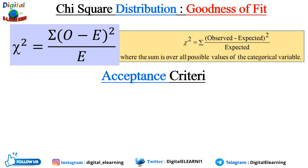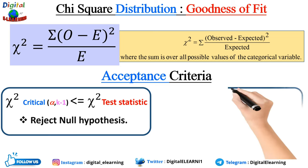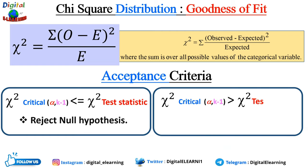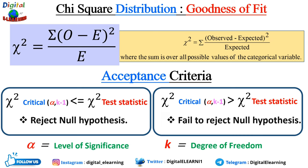The acceptance criteria are as follows: if chi-square critical — determined by alpha and k, the level of significance and degree of freedom — is less than the chi-square test statistic, we reject the null hypothesis. If chi-square critical is greater than the chi-square test statistic, we fail to reject the null hypothesis. Alpha denotes the level of significance and k denotes the degree of freedom.